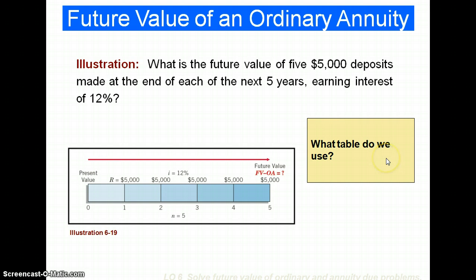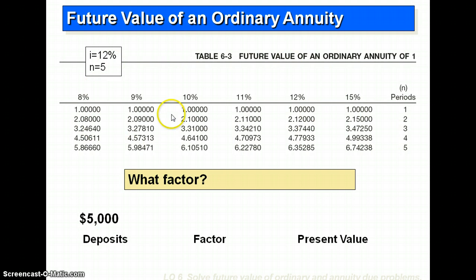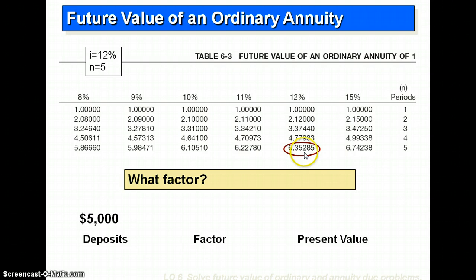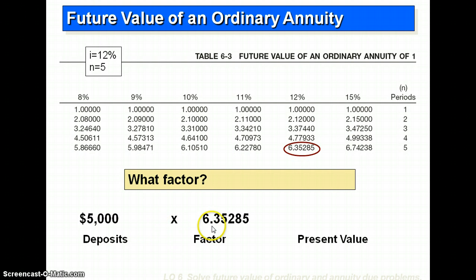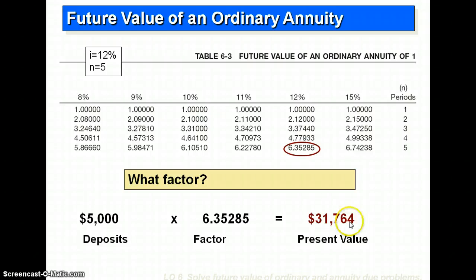The table we use is the future value of an ordinary annuity. The interest rate was 12% for five years, so the factor we're going to use is 6.35285. We take the amount of the payment, $5,000, times 6.35285 to get a future value of $31,764. This is the future value, not the present value — we'll do the present value in a different presentation.